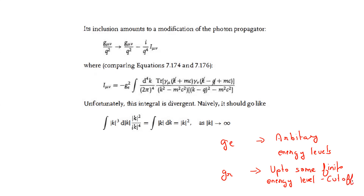One more point: divergences that arise when taking the integral to the upper limit — that is, to infinity — are called ultraviolet divergences. Divergences that arise when taking the integral to the lower limit — that is, to zero — are called infrared divergences. You'll come across both in your field theory texts.